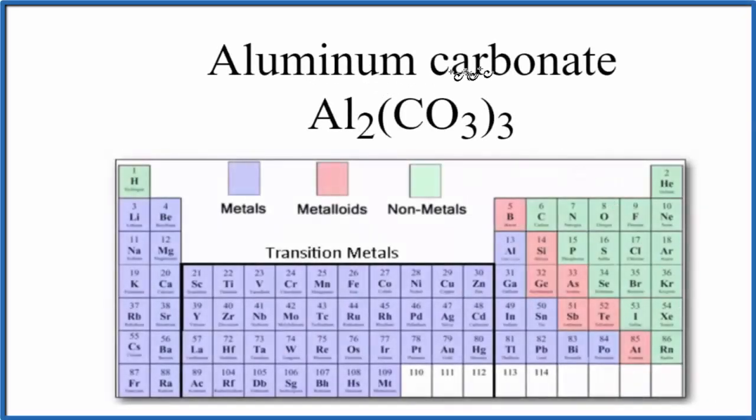In this video, we'll look at whether aluminum carbonate, Al₂(CO₃)₃, is ionic or covalent.